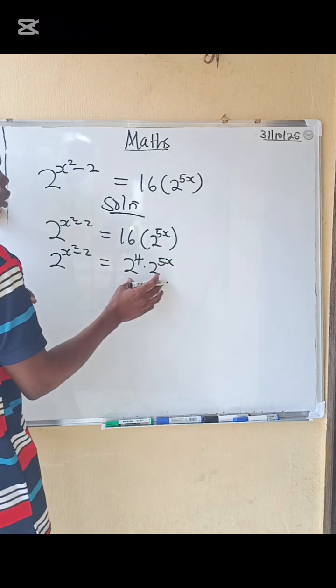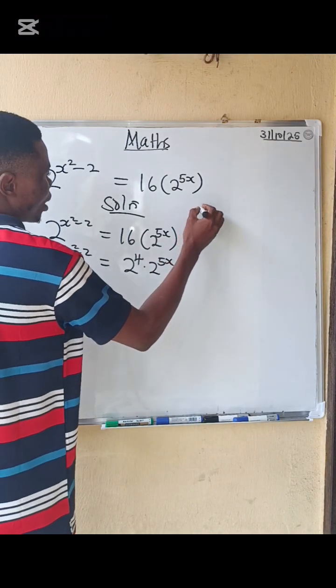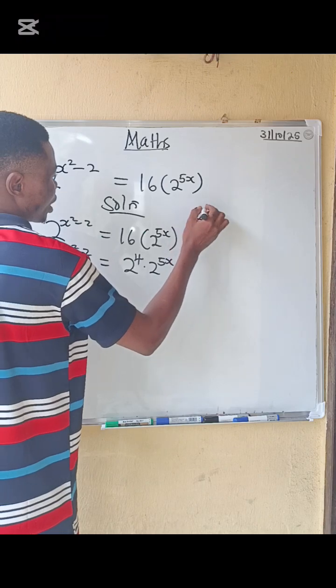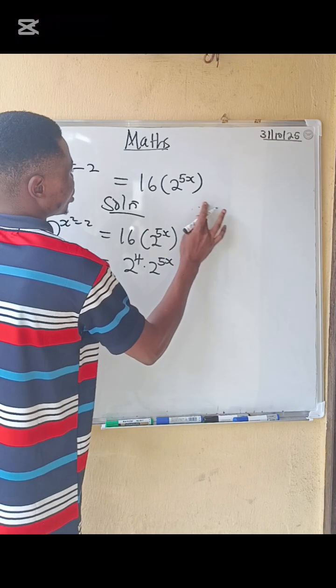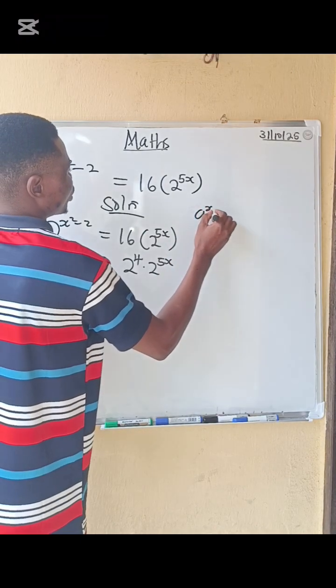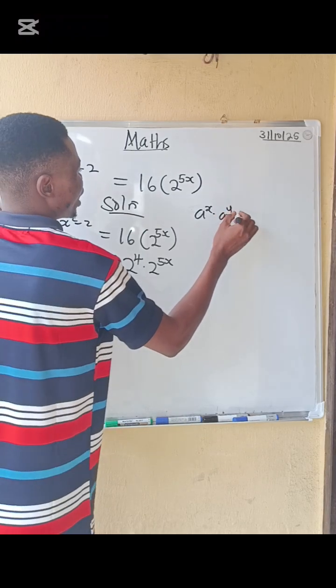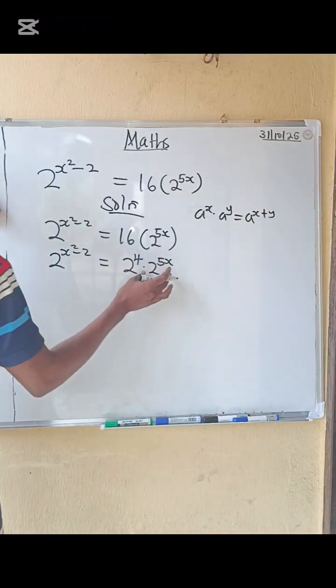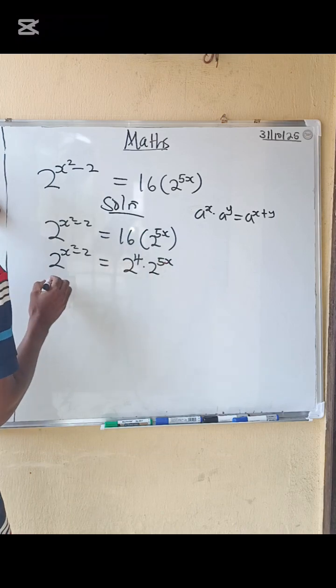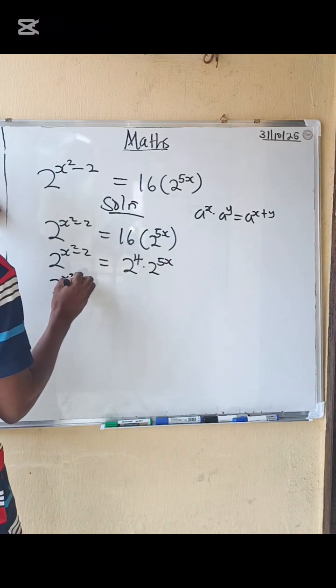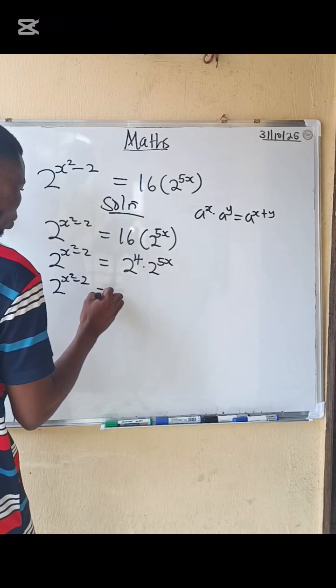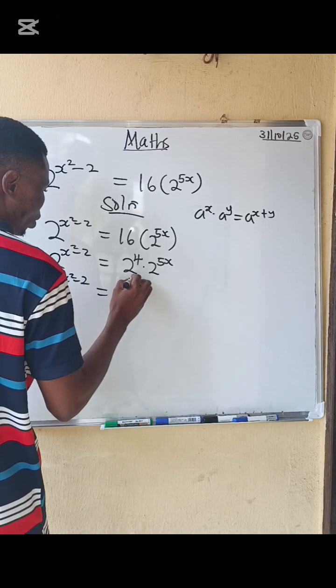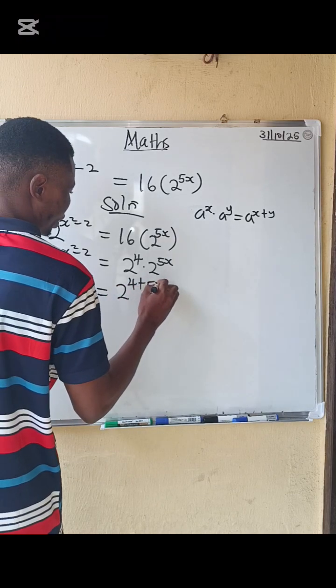From multiplication law of indices, whenever the bases are the same, like a power x multiplied by a power y, the answer is a power x plus y. So I'm going to apply the same thing here. So we have 2 power x squared minus 2 equals to 2 power 4 plus 5x.